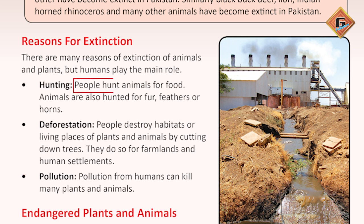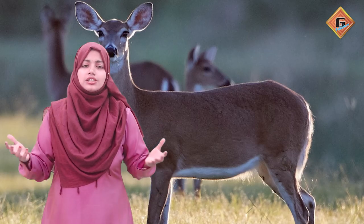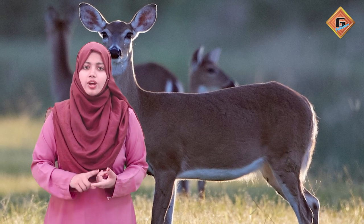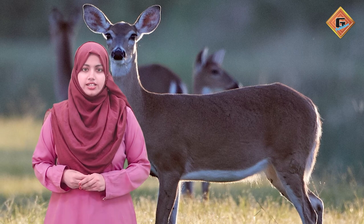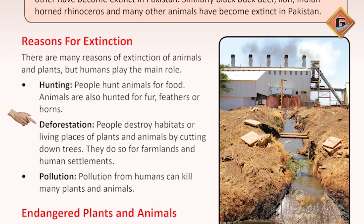When we hunt many animals, their numbers automatically decrease. If animals exist in an area and we start hunting them continuously, slowly and slowly they will be finished. Our deforestation means cutting down forests to make farmlands and buildings. When we destroy our forests, our plants become extinct.